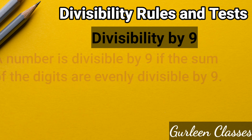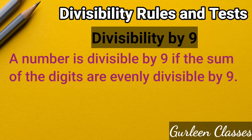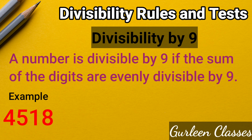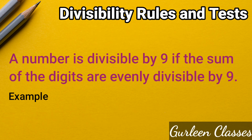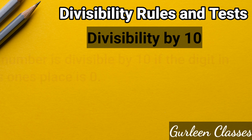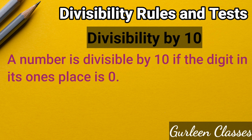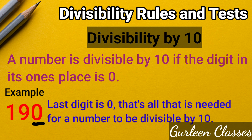Divisibility by 9: A number is divisible by 9 if the sum of its digits is evenly divisible by 9. Example: 4518 — 4 plus 5 plus 1 plus 8 equals 18, which is divisible by 9, so 4518 is divisible by 9. Divisibility by 10: A number is divisible by 10 if the digit in its ones place is 0. Example: 190 — the last digit is 0, so it is divisible by 10.